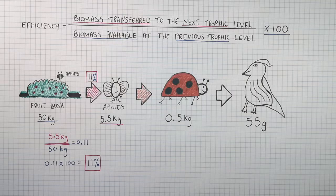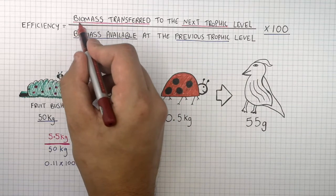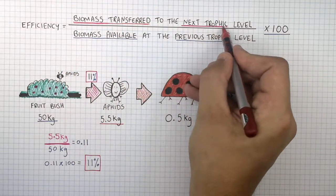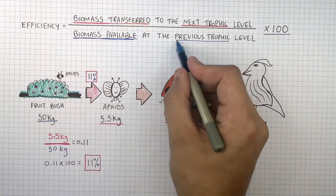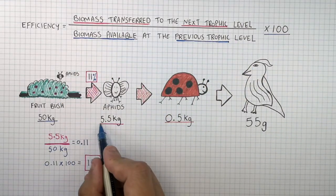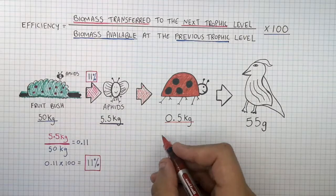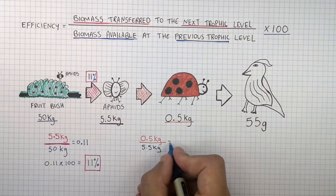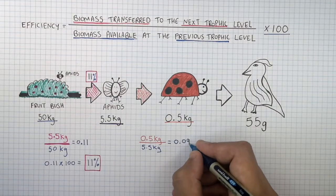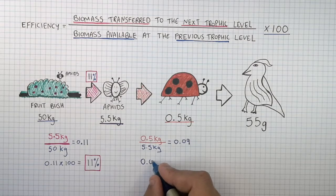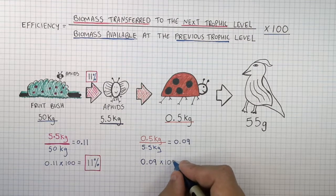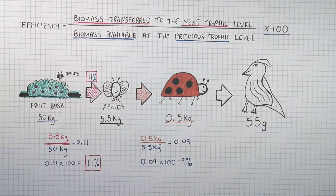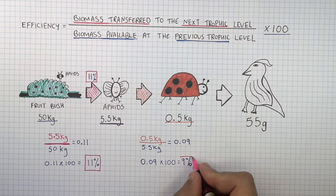To calculate the efficiency of energy transfer between these two trophic levels, you do 0.5 kilograms — the biomass transferred to the next trophic level — divided by the biomass available at the previous trophic level, which is 5.5 kilograms of the aphids. So 0.5 divided by 5.5 gives 0.09, and multiplying by 100 gives an efficiency of 9%.